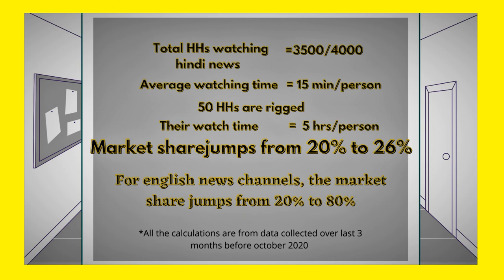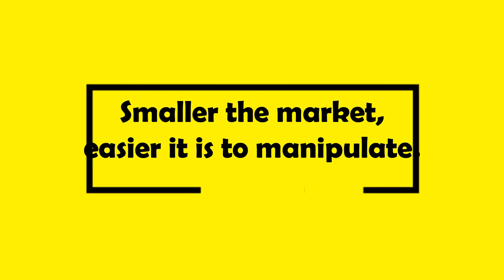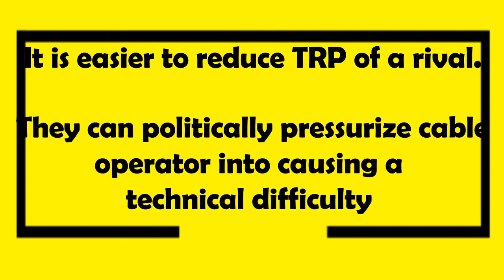This is because the number of meters active for an English news channel is very small — English news has a smaller market. The smaller the market, the easier it is to manipulate the ratings. Another way to rig is by reducing the TRP of rival channels. This can be done by politically pressurizing the cable service provider into causing a technical difficulty on a rival channel, or completely removing the channel from certain regions and providing it only when complained about by the receiver.